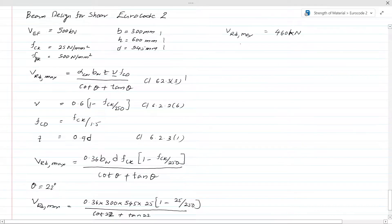Now we know that VRd,max, and our shear force is 500 kN. So VRd,max is less than VEd, our shear force is 500 kN. The maximum shear stress for the angle of 22 degrees is less.